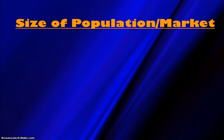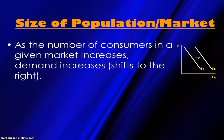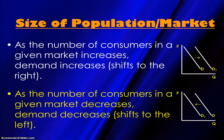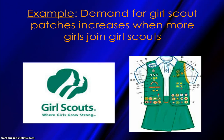The last letter in TIRES is S, for size of population or market. This has to do with the number of people in a market for a good. If the number of consumers in a given market increases, demand will increase. If the number of consumers in a given market decreases, demand will decrease. For example, demand for Girl Scout patches increases when more girls join Girl Scouts, so a higher number of patches will be demanded at every given price and the curve would shift to the right.